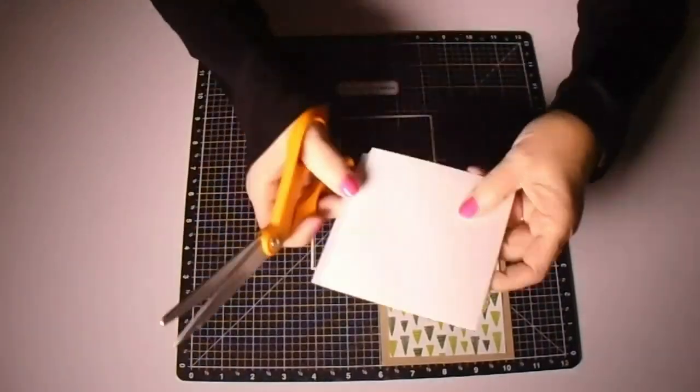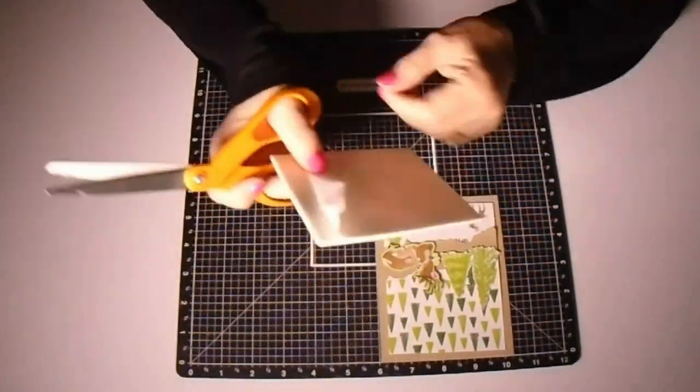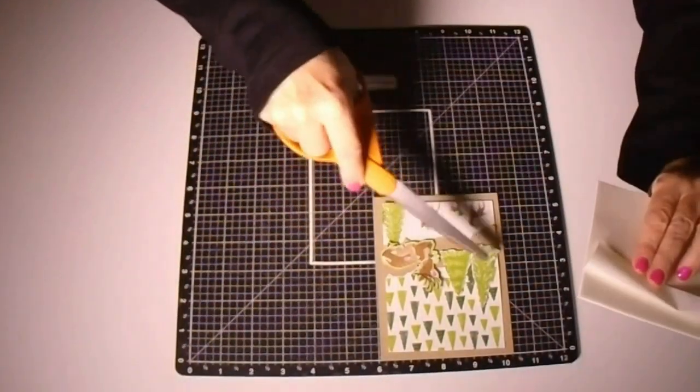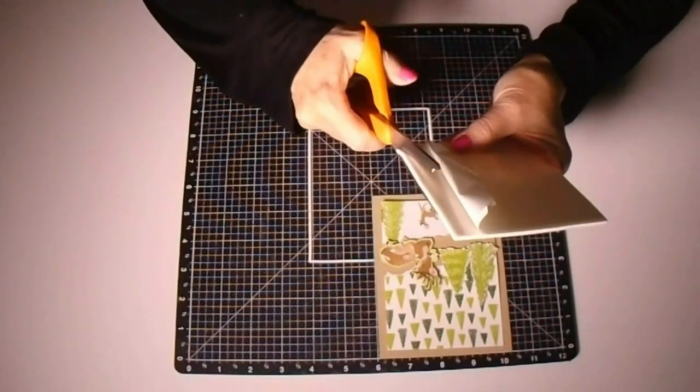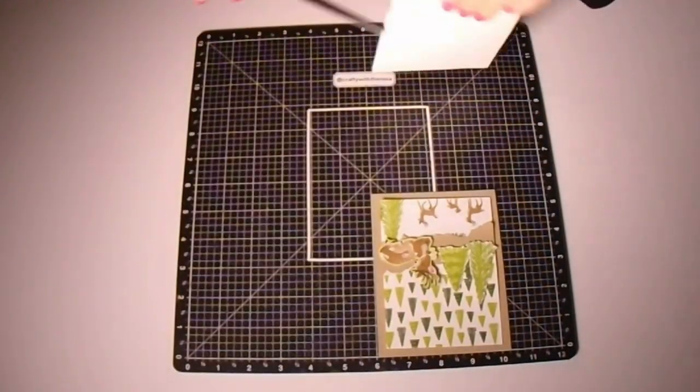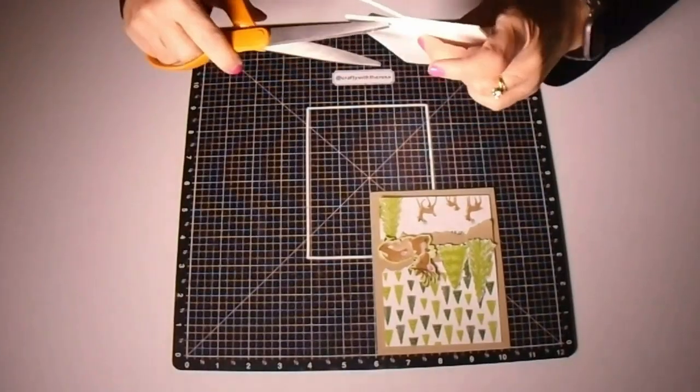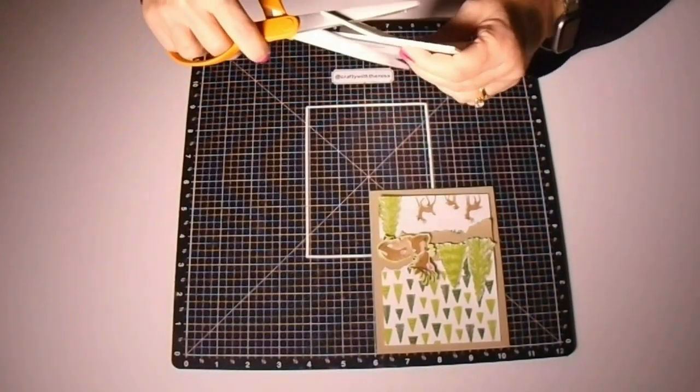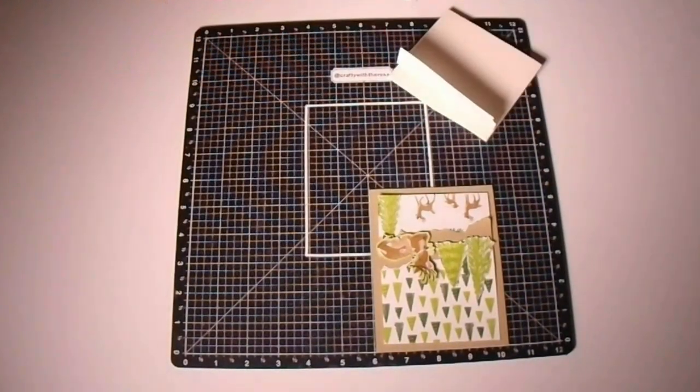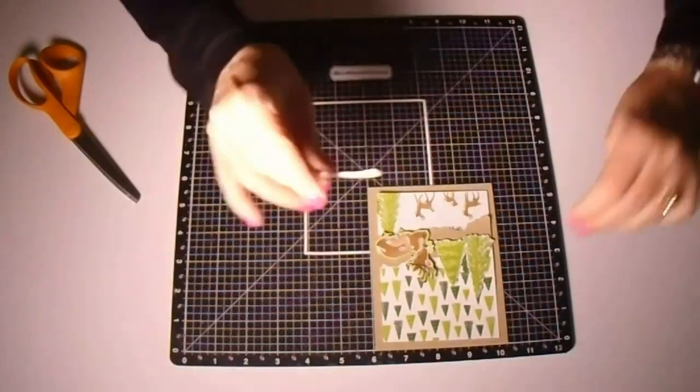So now I'll wiggle back and forth, try to find the look I'm looking for. And once I get it I will grab some dimensionals. In this case it's a dimensional sheet that I cut in strips.